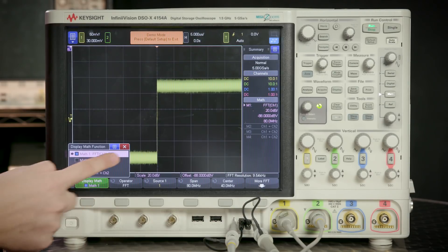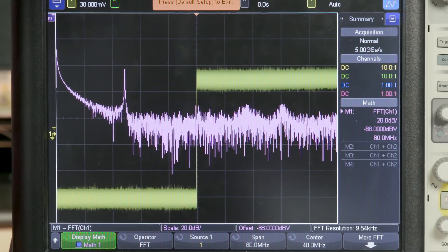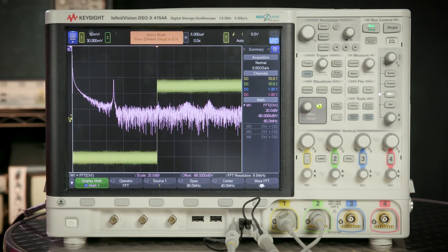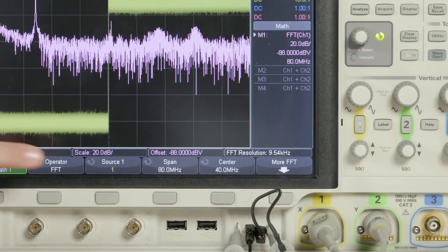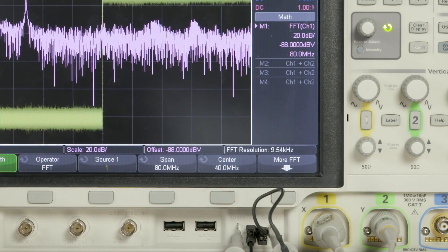Once you have the signal all set up with the FFT turned on, you can clearly see the spikes in frequency. You can auto scale the FFT, or you can play around with the center and span settings to customize your view.